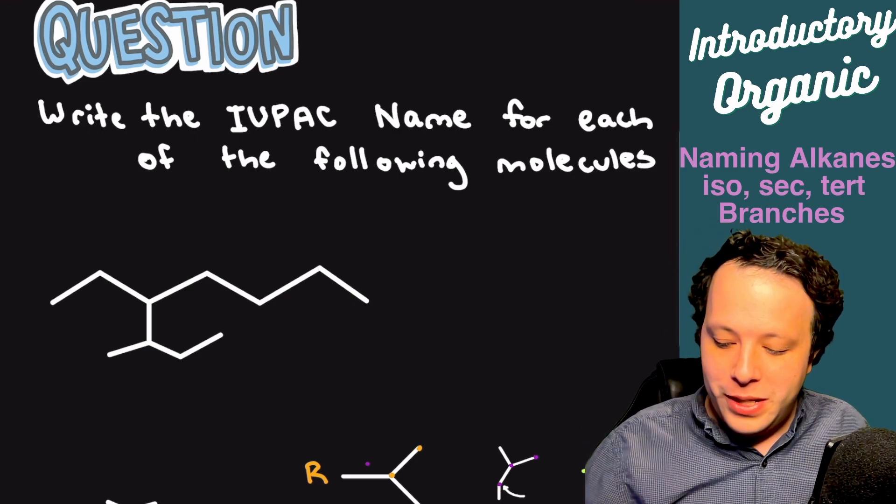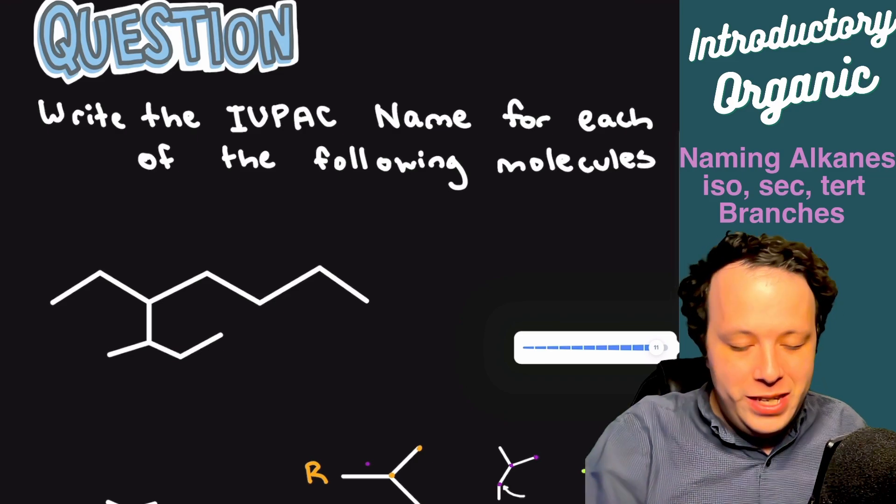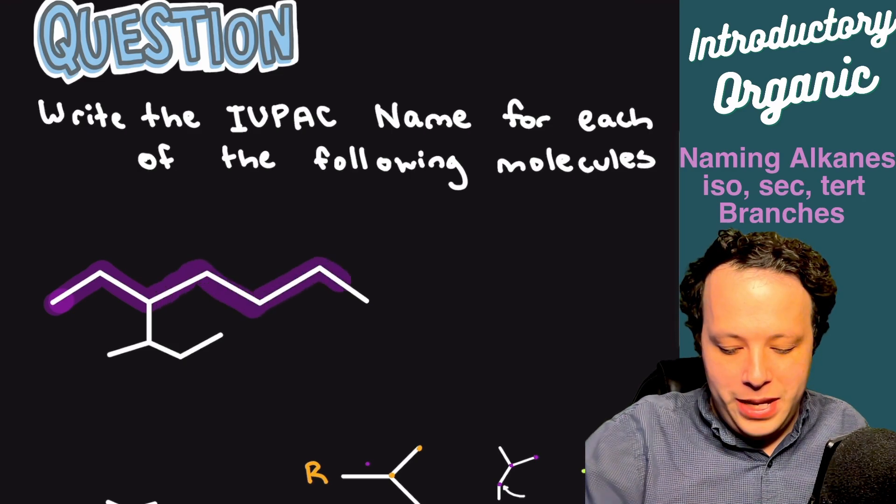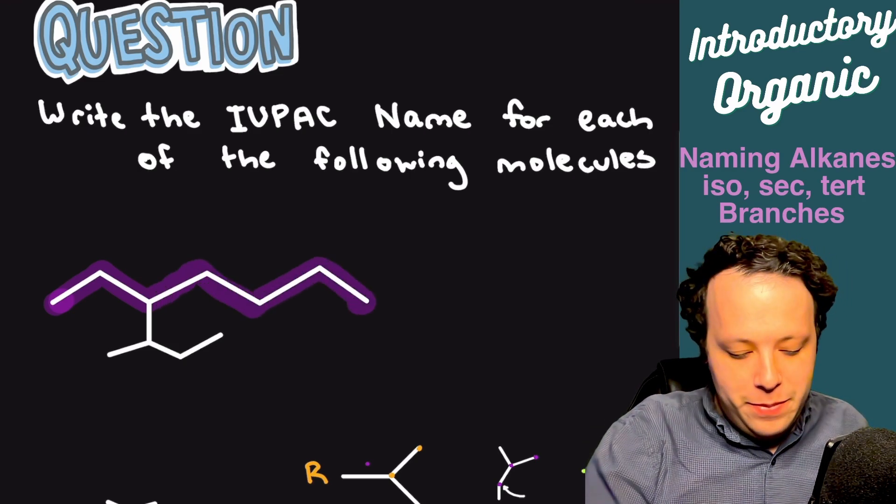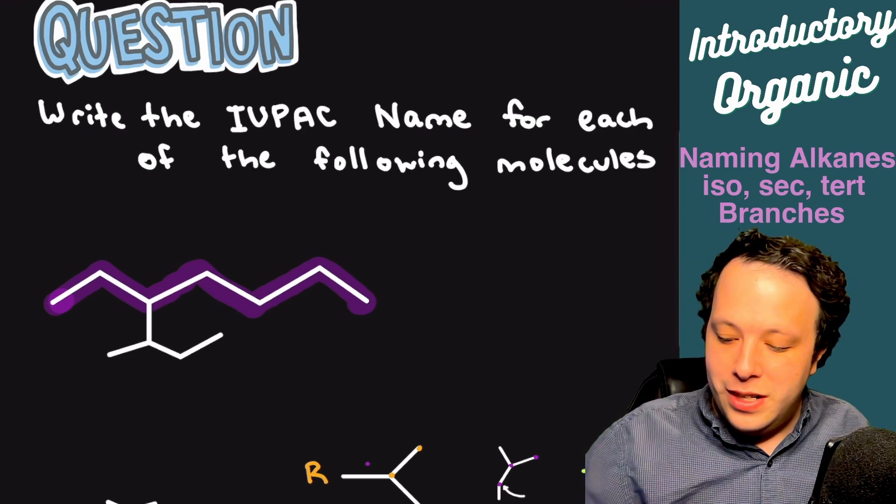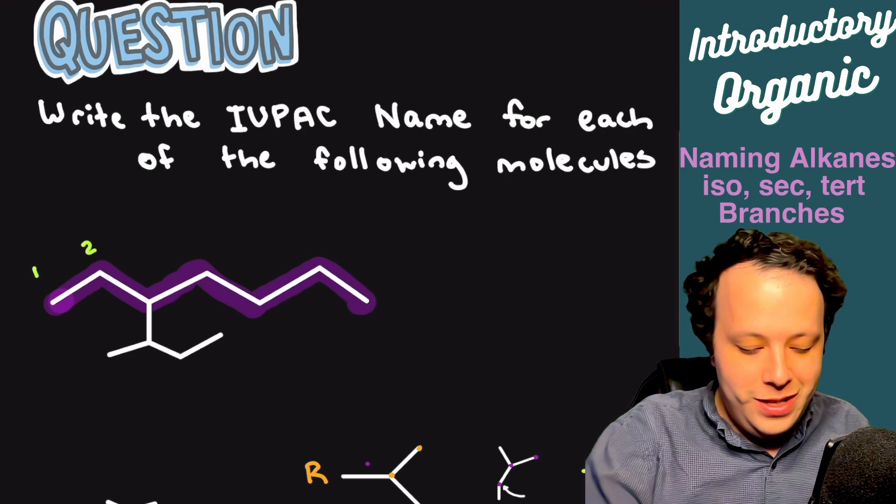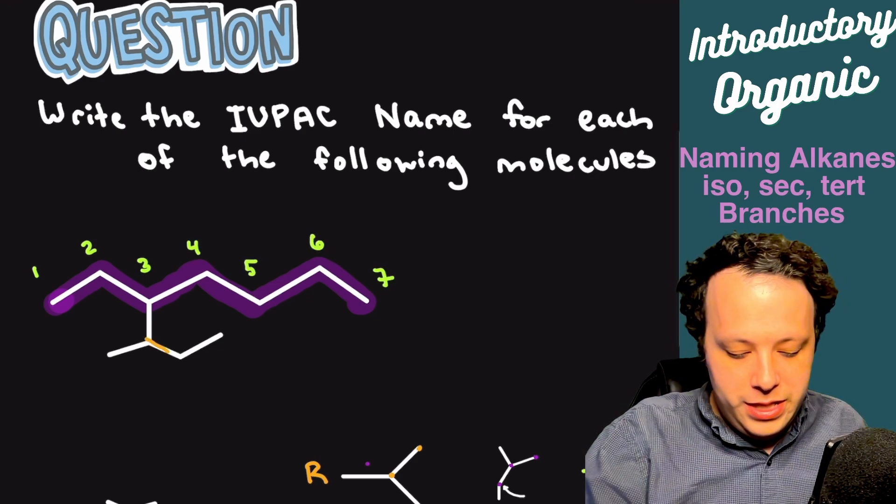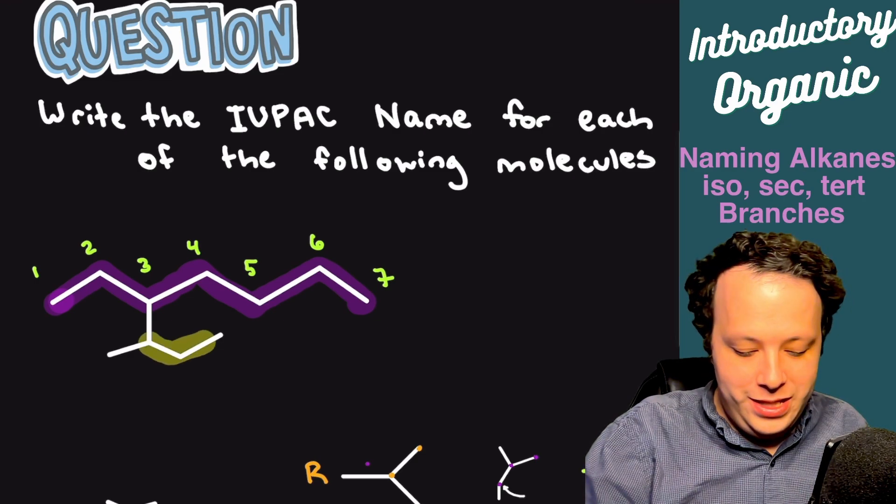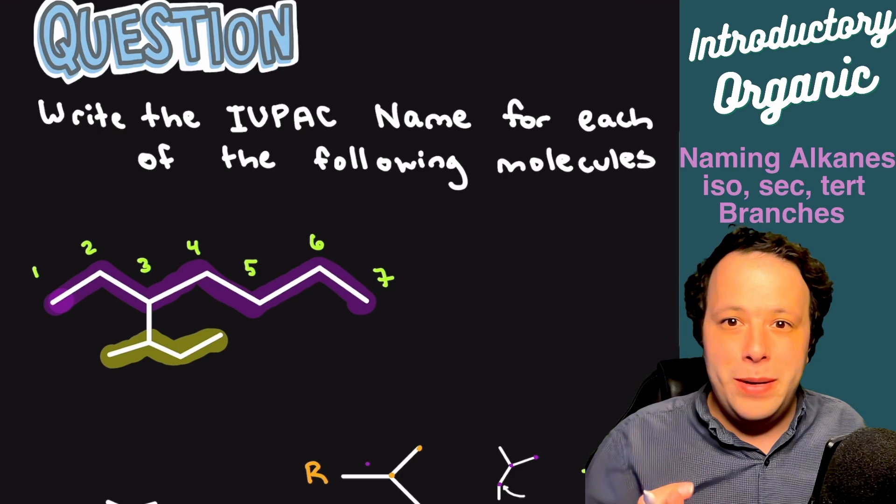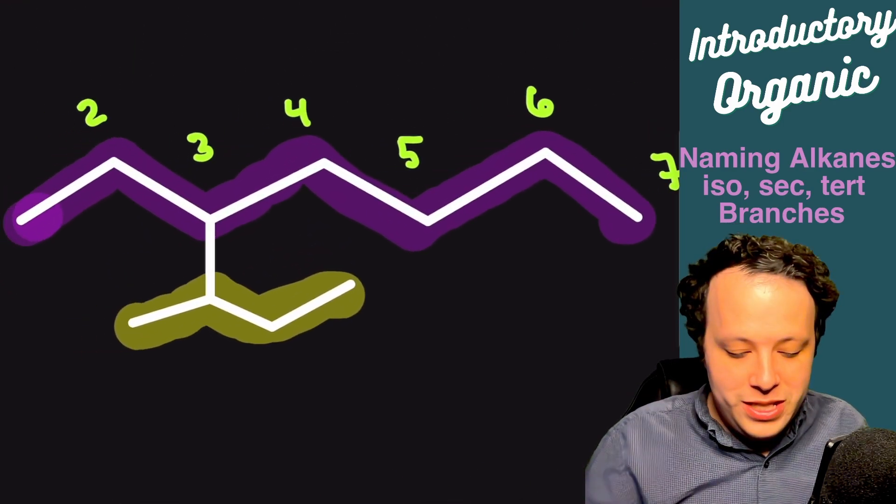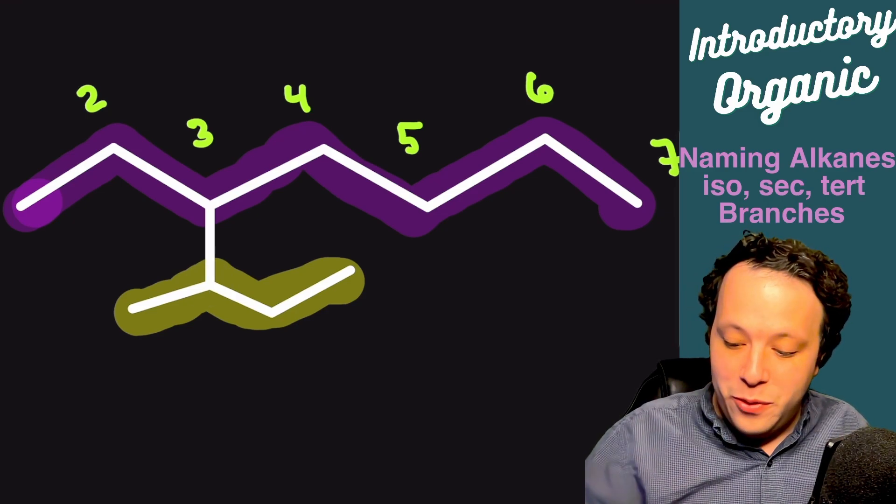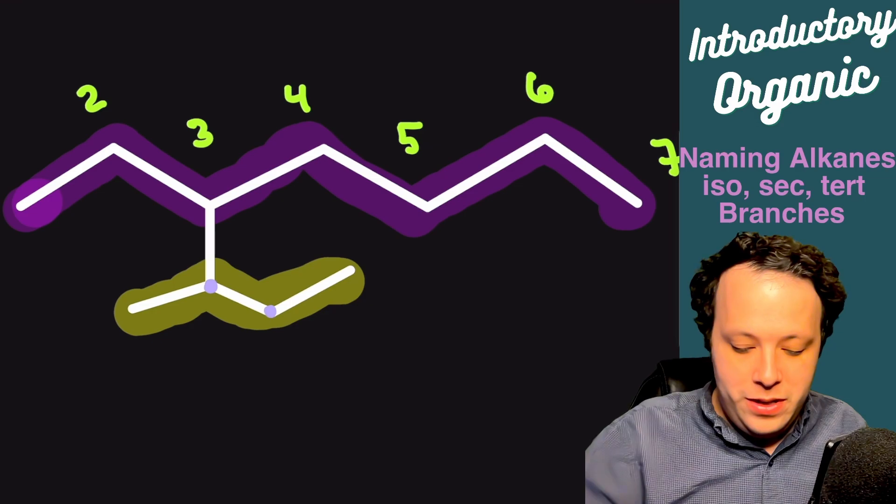The first thing we're going to do is identify what our longest carbon chain is, or our parent chain. If I highlight across, we can see we have a very long chain. If we end up numbering that, you want to start the numbering closest to your substituent or your branch. We have one, two, three, four, five, six, seven, and your branch is this specific shape. We can see we have this unique shape. When it comes to identifying it, you want to determine how many carbons you have. We have four carbons in this structure. So that's going to be one of your butyl shapes.